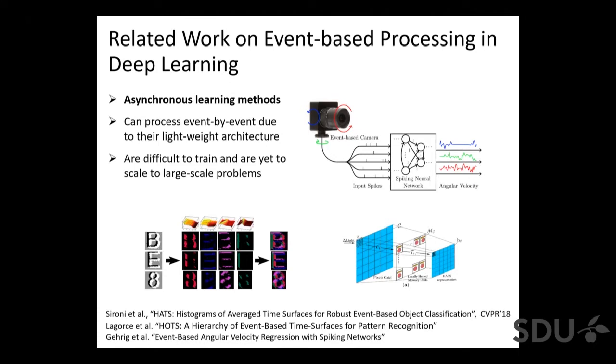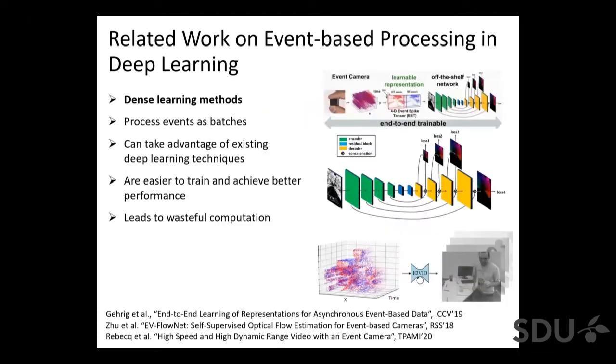On the other hand, dense learning methods process events as batches or groups of events. These groups are converted into grid-like representations which are then used by classical convolutional neural networks. These networks are relatively easy to train due to the availability of efficient back propagation algorithms and thus yield high performance on complex computer vision tasks. However, this performance comes at a cost because these methods also need a lot of computation, and this computation I'll argue in the rest of my talk is kind of wasteful.